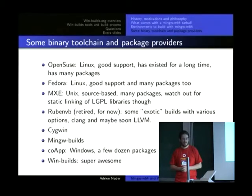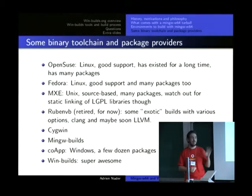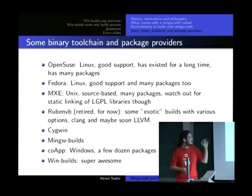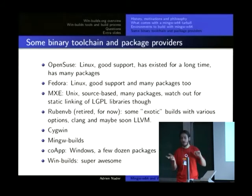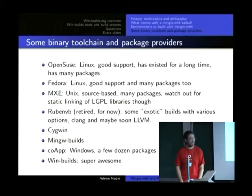MXA builds from source and has quite a lot of packages, but sometimes a bit weird — they do static linking of LGPL libraries, which means you might have trouble with licensing because you won't be able to easily swap the LGPL binary for another one. WinVB has some nice builds — he does many builds, including ones with Clang, and he's been working on LLVM more recently. Cygwin has a cross-compiler in it, which is from Jonathan, who is a co-member of MinGW-w64. And WinBuilds, which is mine, is also available.